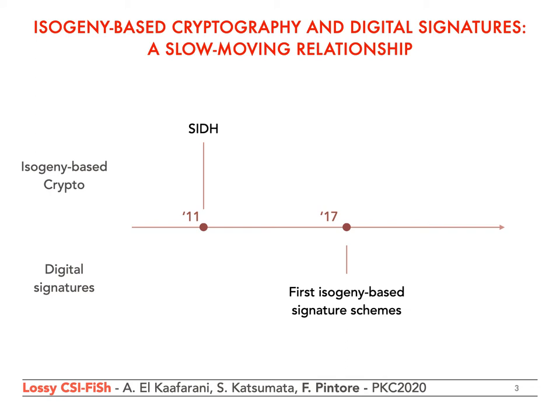The first isogeny-based signatures were proposed six years later in 2017. However, even the most optimized variant produces signatures of sizes at least 12 kilobytes. Then in 2018, CSide was proposed, and a few months later, DeFeo and Galbraith published SeaSign based on the CSide paradigm. Despite providing signatures of remarkably small sizes, signature generation and verification are quite slow.